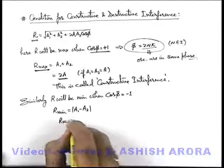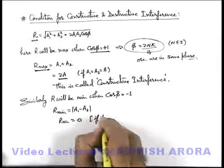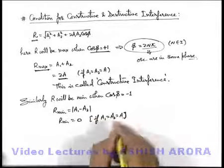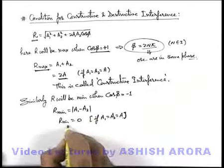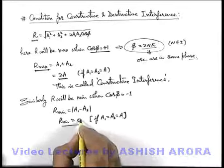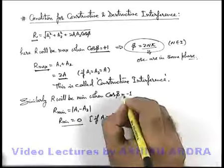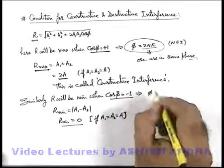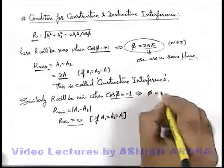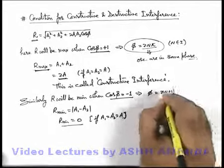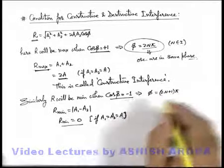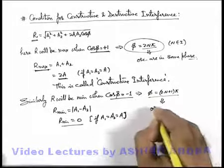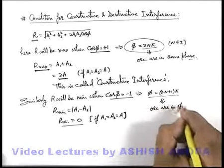This minimum value can also be zero if the two amplitudes are equal. The resulting amplitude will be zero or minimum when cosφ equals −1, which implies the phase difference between the two waves must be an odd multiple of π — only then will cosφ be −1. When the phase difference is an odd multiple of π, the oscillations are in opposite phase.